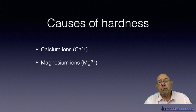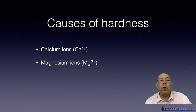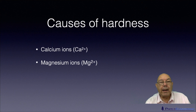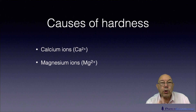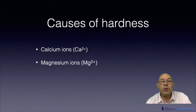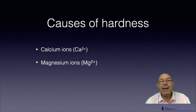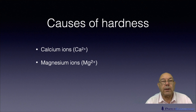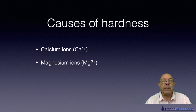The causes of hardness, as mentioned, are the presence of calcium or magnesium ions. Calcium and magnesium are in group two of the periodic table. So Ca²⁺ ions and Mg²⁺ ions are the things that interact with soap and cause a scum rather than a lather, and they're the things that form deposits.